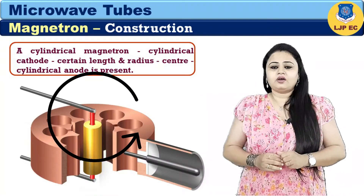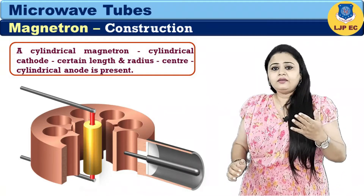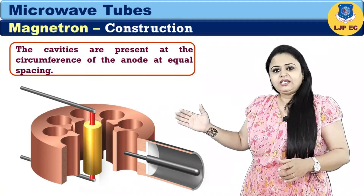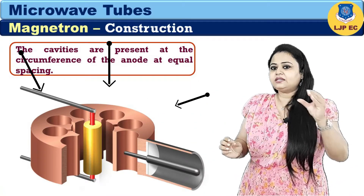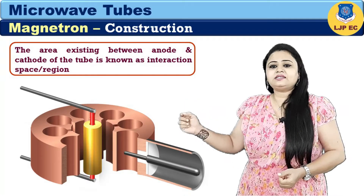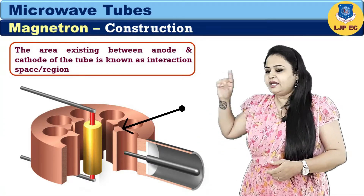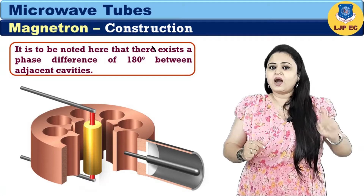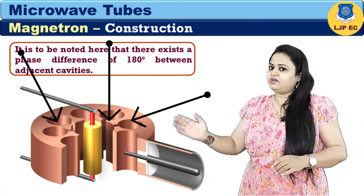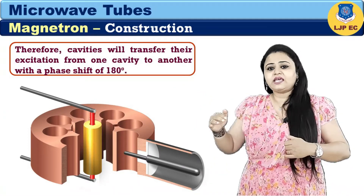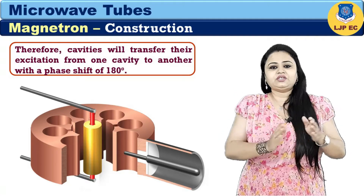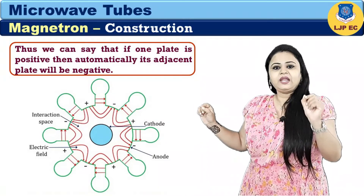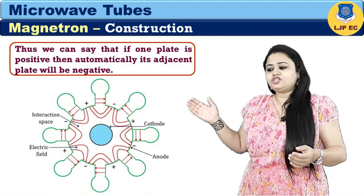A cylindrical magnetron has a cylindrical cathode of certain length and radius present at the centre, around which a cylindrical anode is present. The cavities are present at the circumference of the anode at equal spacing. The area existing between the anode and cathode of the tube is known as the interaction space or interaction region. There exists a phase difference of 180 degrees between adjacent cavities, so if one plate is positive, then automatically its adjacent plate will be negative, as clearly shown in the figure.